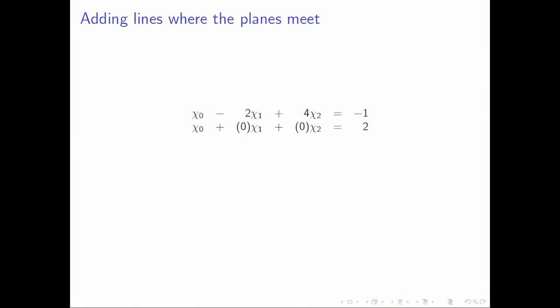The line where the first two planes intersect is the line of all points that satisfy both of these equations. So we need to find all the points that simultaneously satisfy both of these equations. And how do you do that? You write it as an appended system.